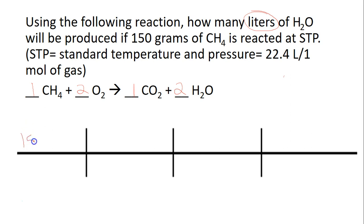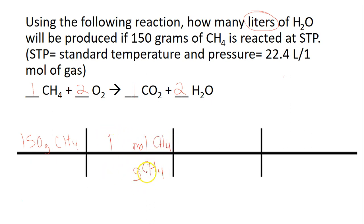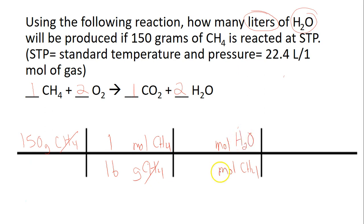We start with our given: 150 grams of CH4. We bring grams of CH4 to the bottom and go back to moles — we always have to convert back to moles first. For CH4, 1 mole equals its molar mass: 12 + 4 = 16. Grams cancels out, leaving moles of CH4. We're looking for liters of H2O, so we bring moles of CH4 to the bottom and go to moles of H2O. I circle mole over mole, find my coefficients — 1 for CH4 and 2 for water. Moles cancels out, leaving moles of H2O.